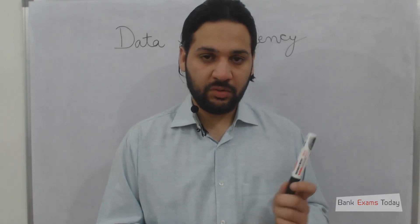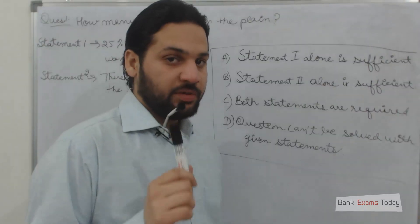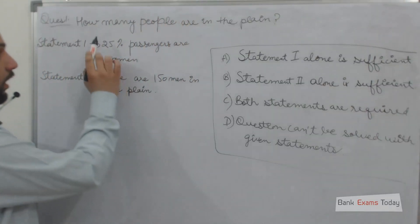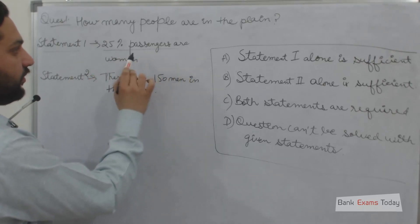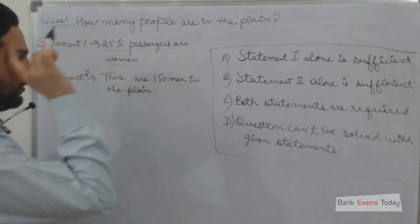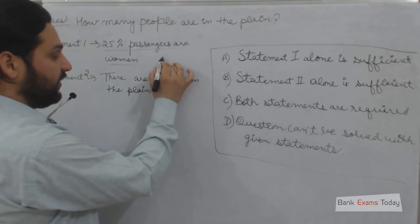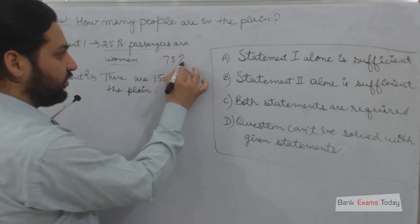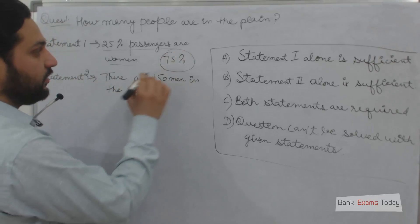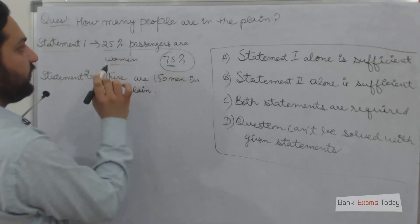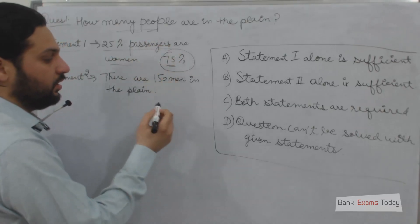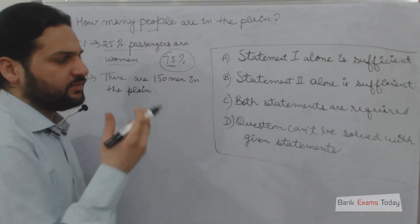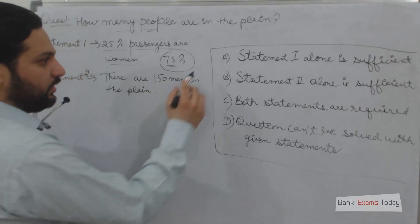We have a simple question here: How many people are in that plane? First, take statement 1: 25% passengers are women. That means 75% of the passengers are male. But 75% or 25% doesn't answer the question of how many people - we need the answer in numbers like 750, 850. So statement 1 alone is not sufficient.